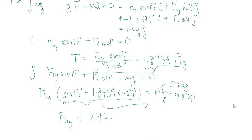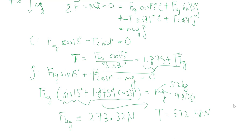Using the calculator we can find my f leg. Once we have our f leg we multiply that by 1.8754 to find that my tension is 512.58 newtons. So typing it up pretty 273 and 513 newtons.